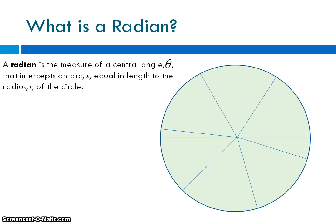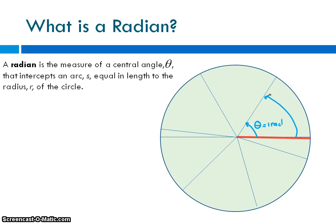We're going to start off with what is a radian. The formal definition of a radian is the measure of a central angle theta that intercepts an arc S equal in length to the radius R of the circle. So here is an angle measurement. One radian is when my radius — this red line — equals the arc length. That's one radian, abbreviated one rad.